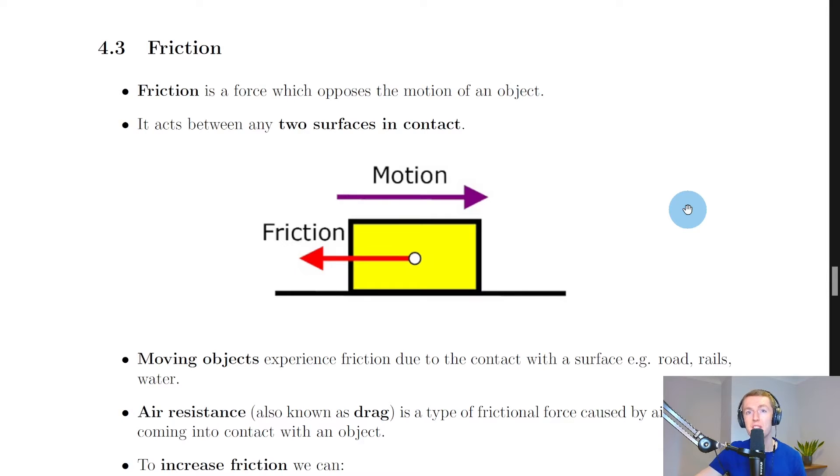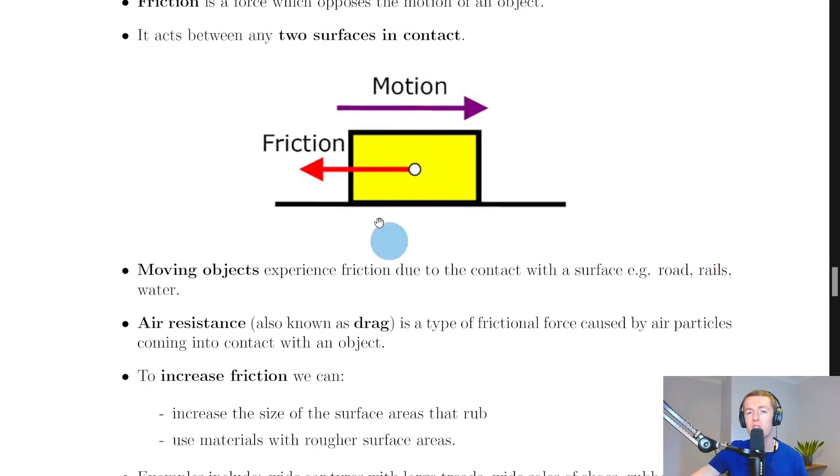Now we're going to look at a specific type of force which is called friction. We define friction as a force which opposes the motion of an object. It acts between any two surfaces in contact. Let's say you've got an object here, just this simple box, which is moving to the right. Then that means that the frictional force is going to act to the left against the direction of motion. That means if the object is moving to begin with, the friction acts to slow it down.